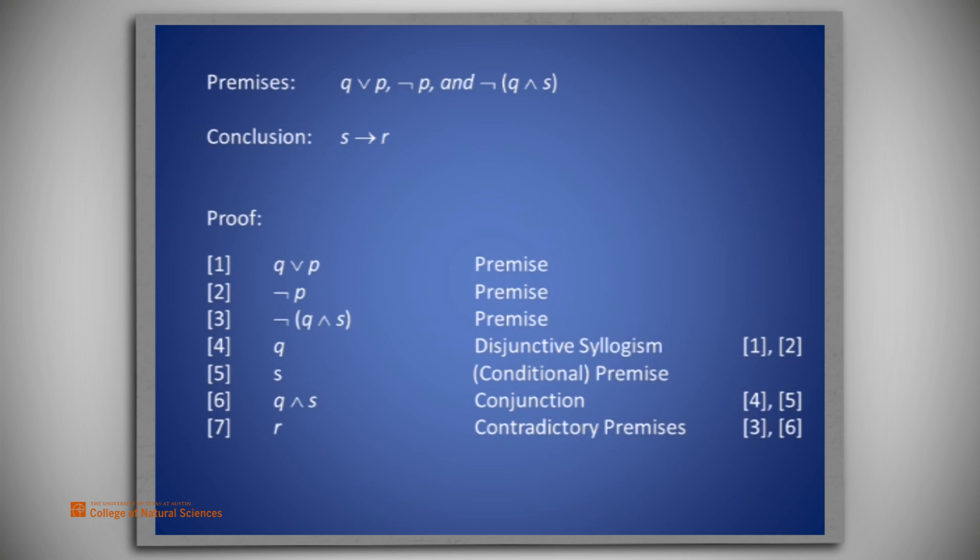Let's remember, we have not proved R from the original premises. The only way we obtained R was the introduction of the conditional premise S. The conditionalization rule allows us to say that from the original premises we have S implies R. This is called discharging the conditional premise.